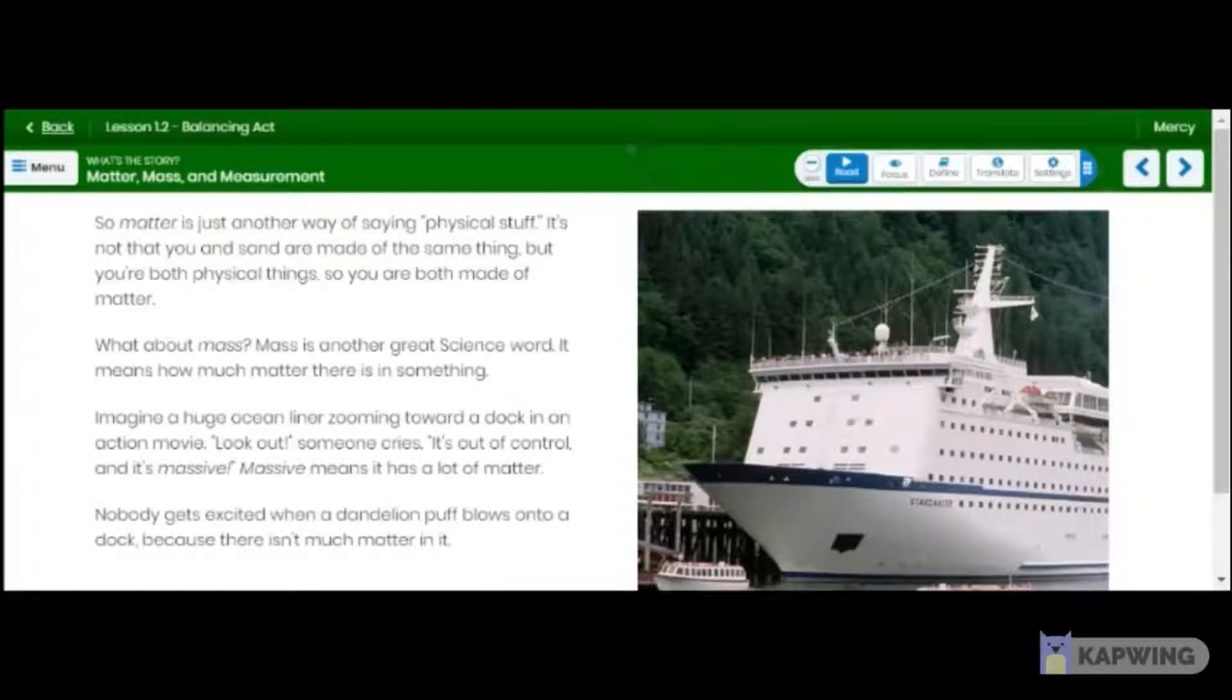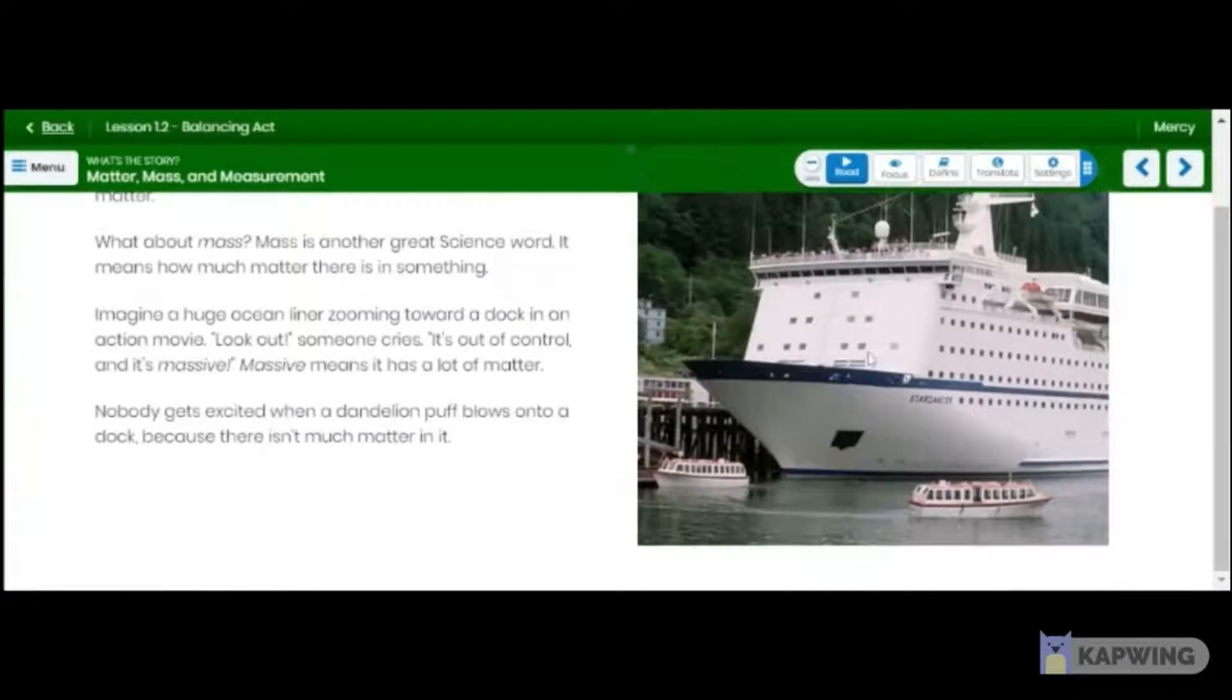Imagine a huge ocean liner zooming toward a dock in an action movie. So this is what the ocean liner is. It's like a huge ship. Zooming toward a dock in an action movie. So here's the dock. Dock is the place where people get off from the ship and get on the ship. Yeah. Imagine a huge ocean liner zooming toward a dock in an action movie. Look out. Someone cries. It's out of control. And it's massive. Massive means it has a lot of matter. So this ocean liner, it's massive. Nobody gets excited when a dandelion puff blows onto a dock because there isn't much matter to it. So an ocean liner is much more massive, has much more matter than a dandelion puff.